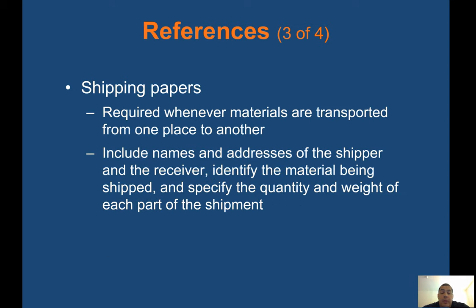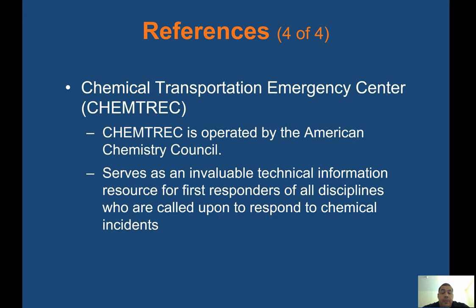Shipping papers are required whenever materials are transported from one place to another. They include names and addresses of the shipper and receiver, identify the material being shipped, and specify the quantity and weight of each part of the shipment. ChemTREC — the Chemical Transportation Emergency Center — is operated by the American Chemistry Council and serves as an invaluable technical information resource for first responders responding to chemical incidents.